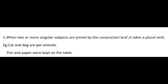First rule: When two or more singular subjects are joined by the conjunction 'and,' it takes a plural verb. Examples: 'Cat and dog are pet animals.' 'Pen and paper were kept on the table.' Here you can see two singular subjects — cat, dog, pen, paper — but when they are joined by the conjunction 'and,' we use only a plural verb.